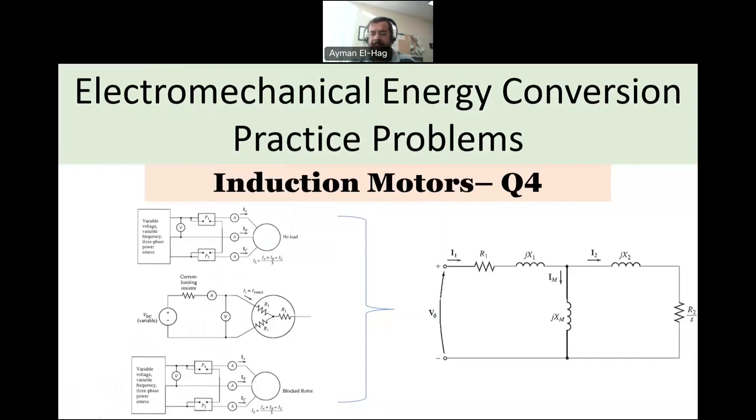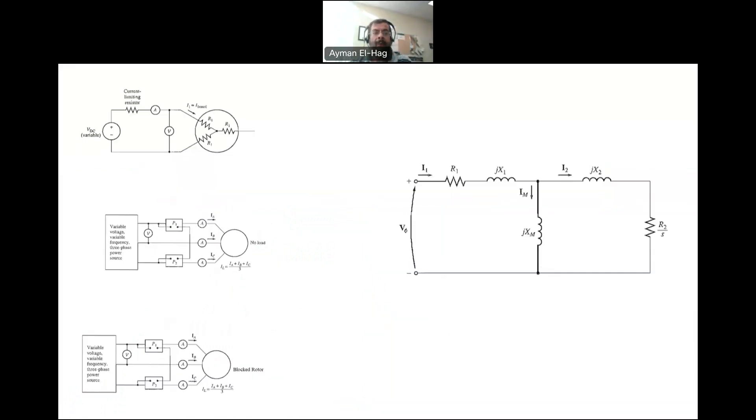For the DC test, it will give us R1. As you can see here, this is a Y connection, so we have two of the resistors in series. We apply DC voltage, measure the current, and using Ohm's law, we will be able to find R1 from this test.